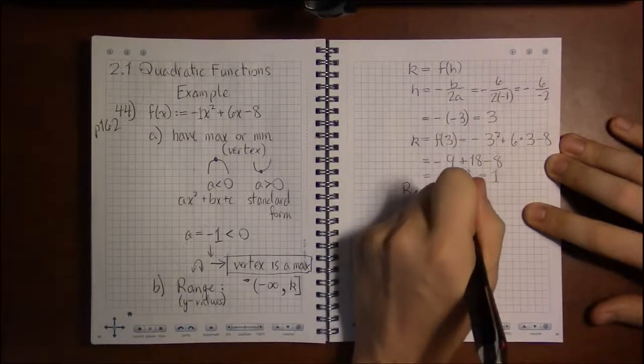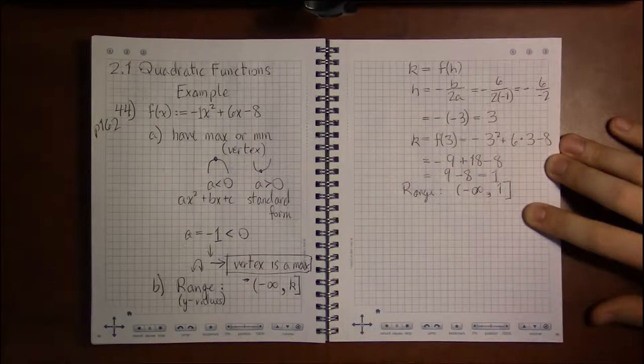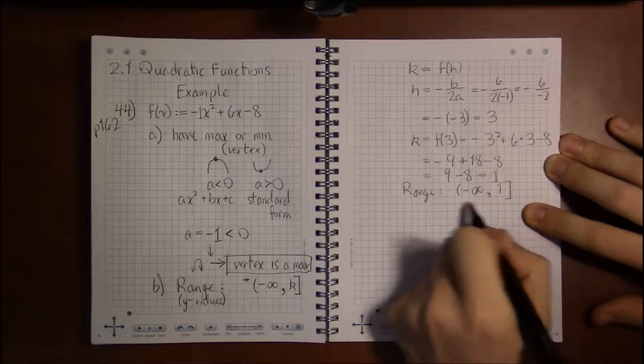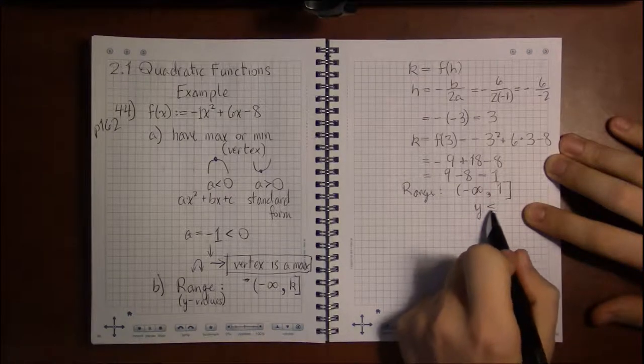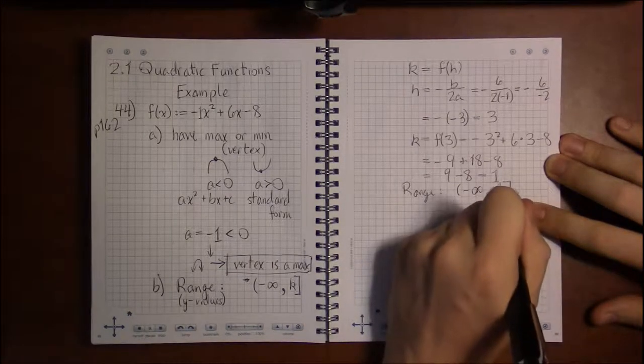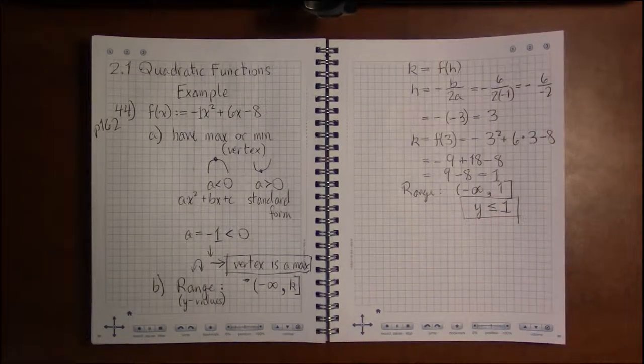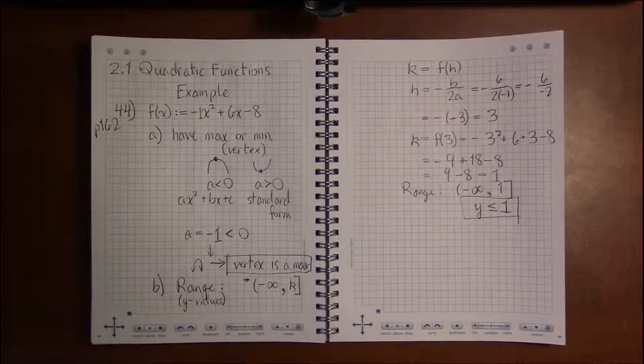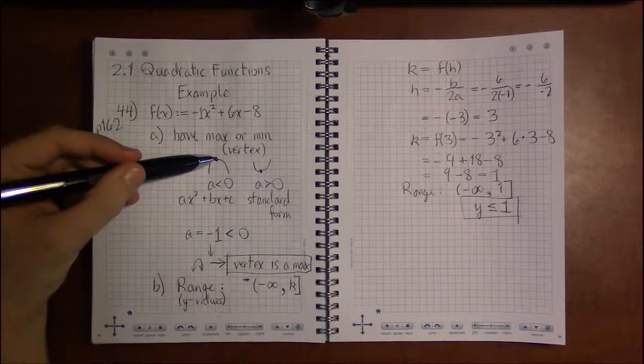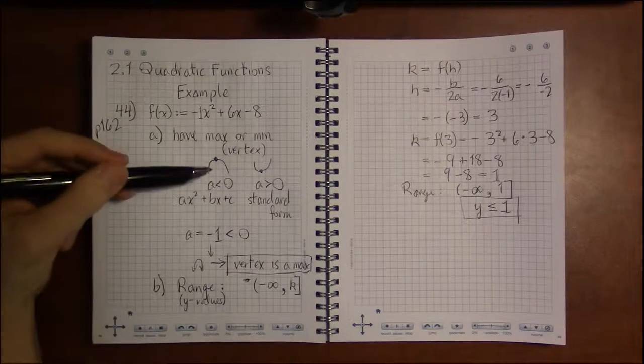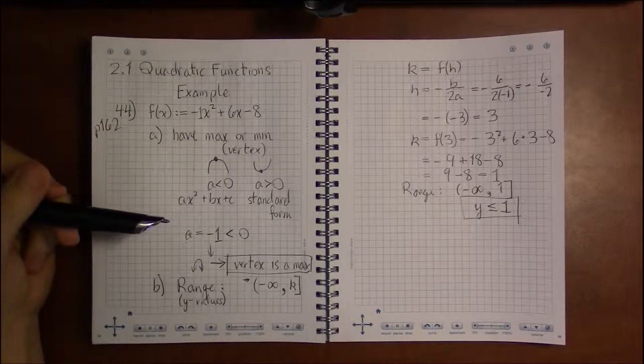The range for this function is, I'm doing interval notation and I'm never requiring interval notation but you do have to read it, and this is saying that y can be anything up to and including 1. That's simply because we have a max, we have y values from 1 down and no y values occur above 1.